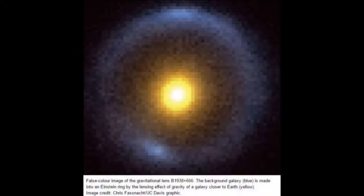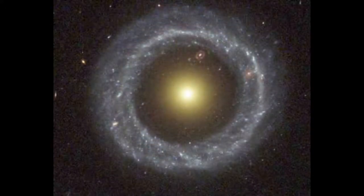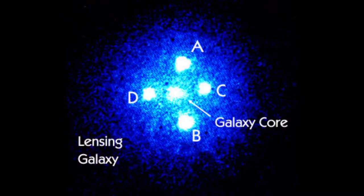And this Einstein ring is indeed almost perfect, but with more sharpness such a structure would probably be considered a ring galaxy. More famous than rings is the Einstein cross.